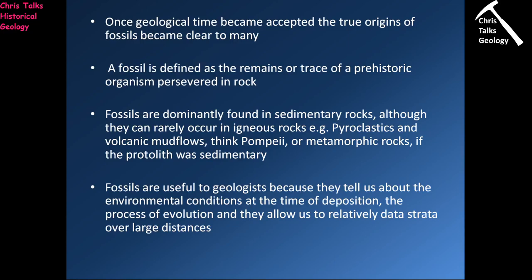Think of Pompeii — a Roman city that got hit by a pyroclastic flow. A flow of ash and dust came flying down the side of Mount Vesuvius and ran straight into Pompeii, covering the entire city in a layer of ash, essentially preserving everything in it including the buildings and the people. The people were preserved as voids within the ash, essentially observed as trace fossils.